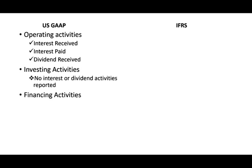I'm going to show you side by side the comparison between U.S. GAAP and IFRS, emphasizing the differences. Under U.S. GAAP, you have three categories: Operating Activities, Investing Activities, and Financing Activities. Interest received is Operating, Interest Paid is Operating, Dividend Received is Operating, and Dividend Paid is Financing Activities. There are no interest or dividend activities reported under Investing Activities under GAAP.